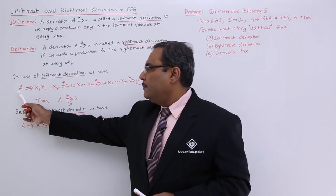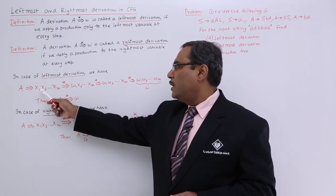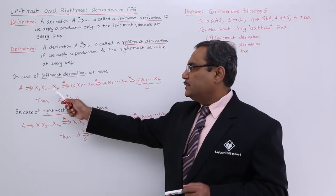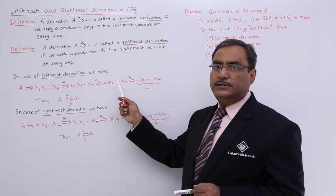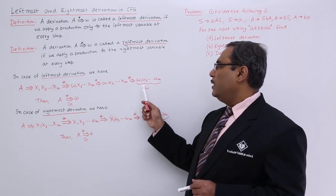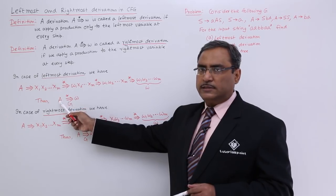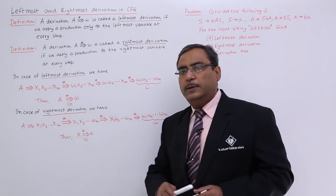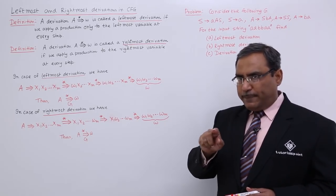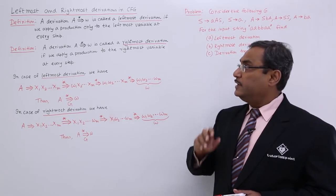That means, suppose from A, I have got x1, x2, ... xm. Then after applying multiple production rules from x1, I shall form W1 consisting of terminal symbols, and then the rest will be x2, ..., xm. First I consider x1, then from x2, W2 will be generated. In this way, proceeding with multiple production rules, from xm I will get Wm. So W1, W2 up to Wm can be considered as W. Thus from start variable A, I can reach W following grammar G. We are deciding that whatever variable is obtained first from the left-hand side in our sentential forms will be derived using the respective production rules.